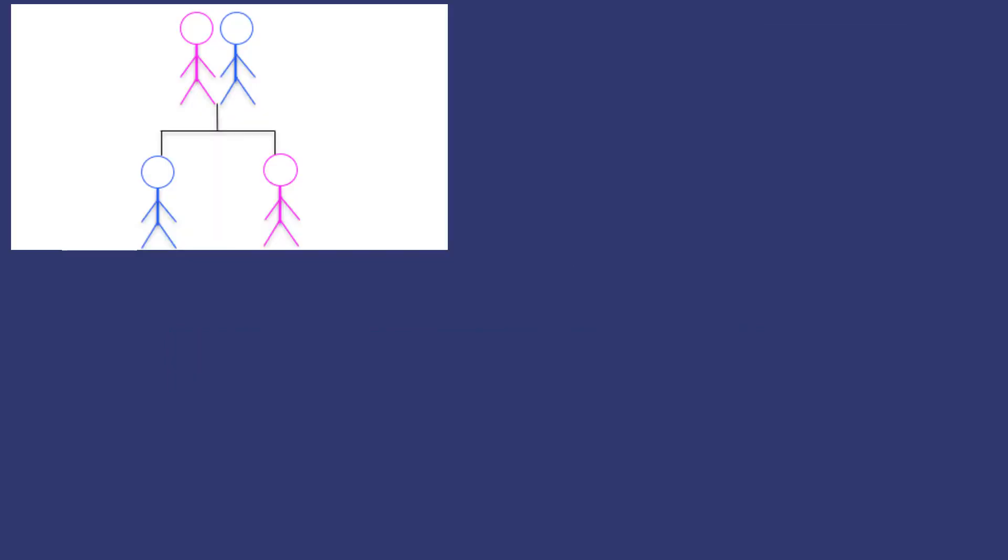Consider this family tree. The parents are the generation at the top and they had two children, a boy and a girl. Each child inherited 50% of their DNA from mom and the other 50% from dad. To be clear, your DNA comes from your parents. This is called genetic inheritance.